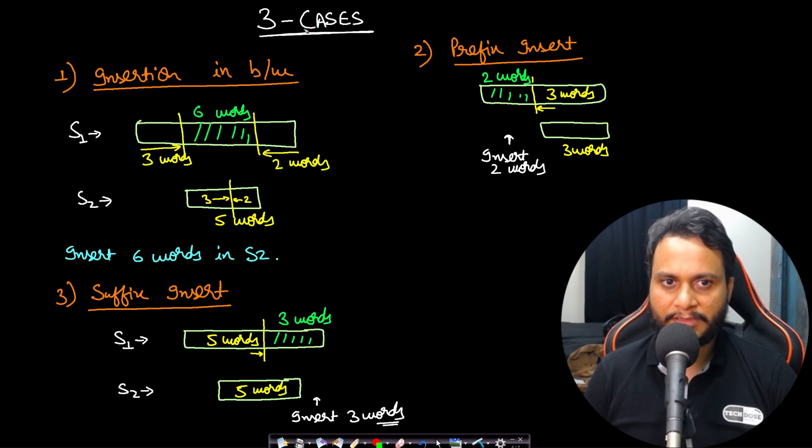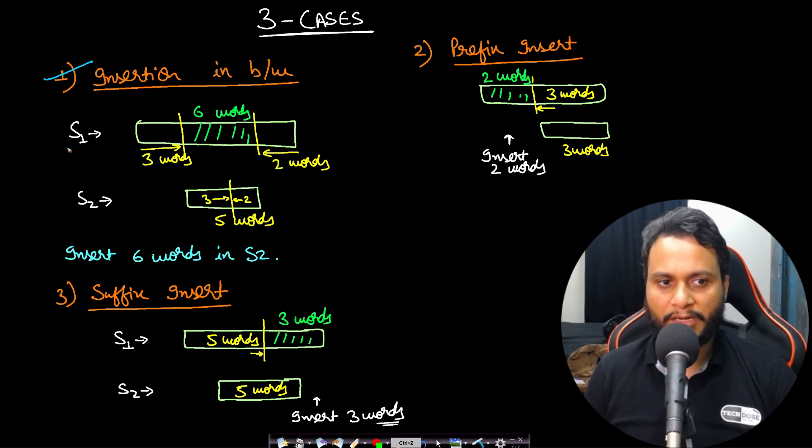So what we have seen is three cases. The first case was insertion in between, where S1 is the larger sentence where the first three words were the same as the first three words in S2 and the last two words were the same as the last two words in S2, where S2 had actually five words. So all the words were matching. So we can insert the rest of the six words in the middle just at the partition point so that S2 can get converted to S1.